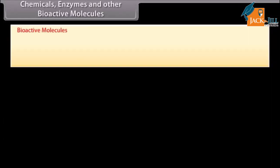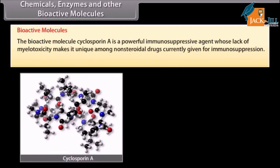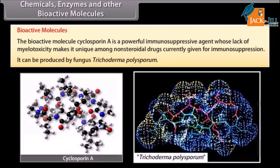Bioactive molecules. The bioactive molecule cyclosporine A is a powerful immunosuppressive agent whose lack of myelotoxicity makes it unique among non-steroidal drugs currently given for immunosuppression. It can be produced by the fungus Trichoderma polyspermum.